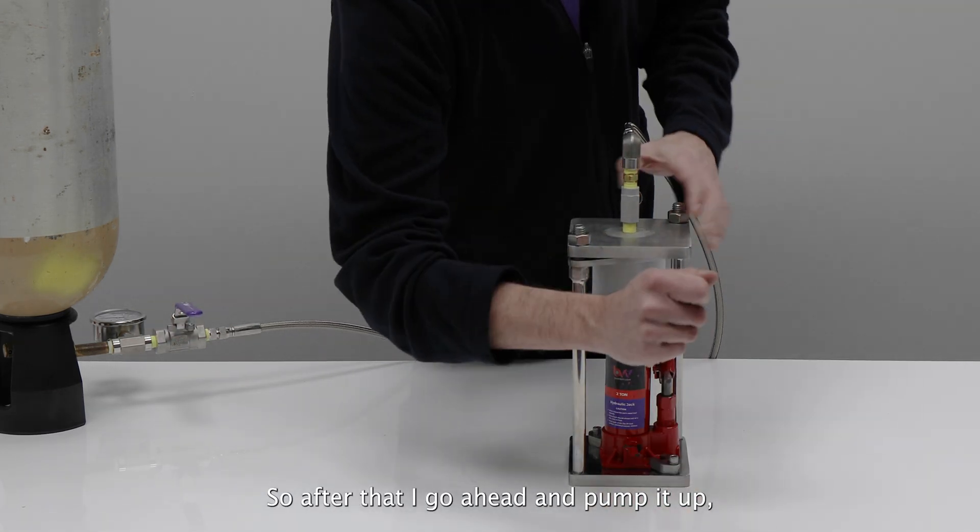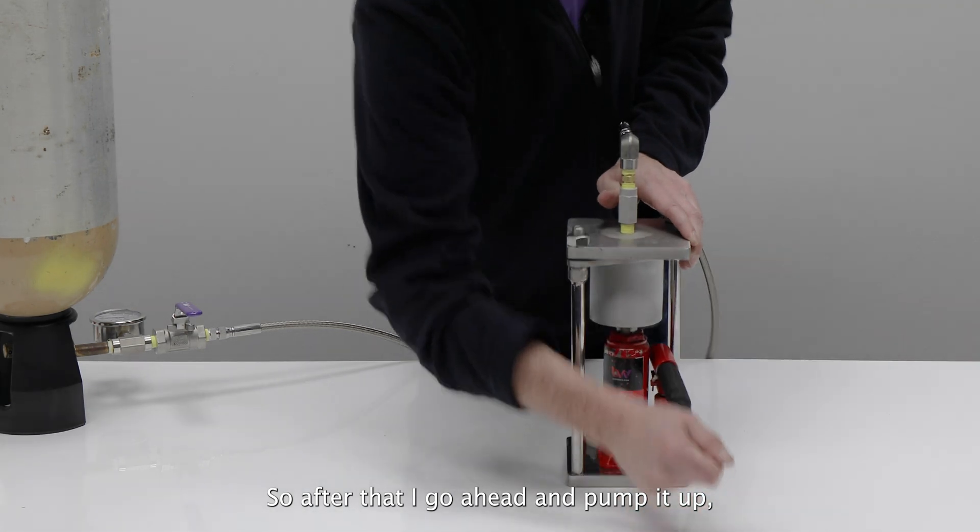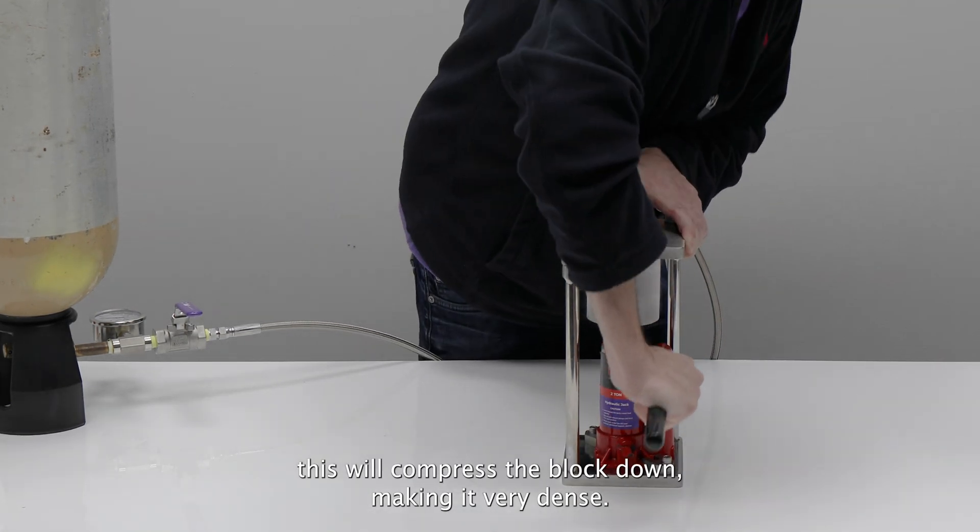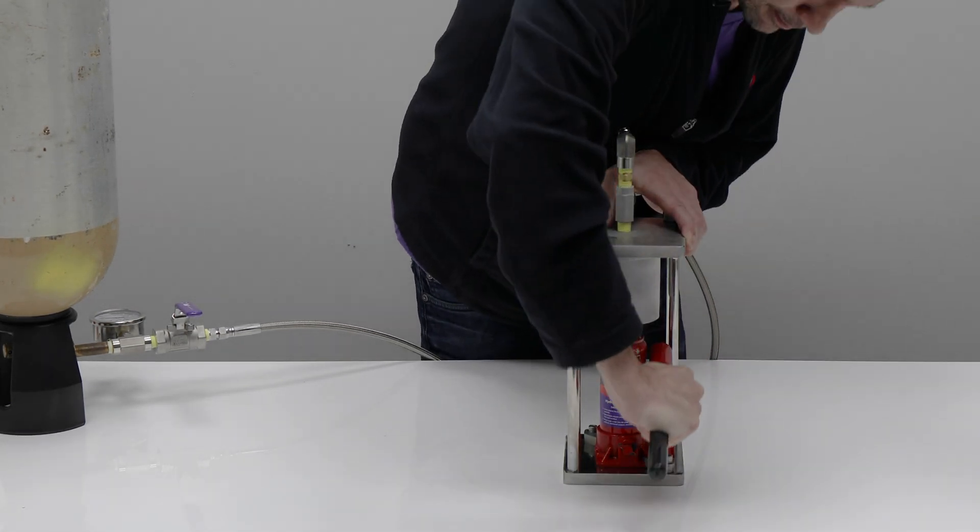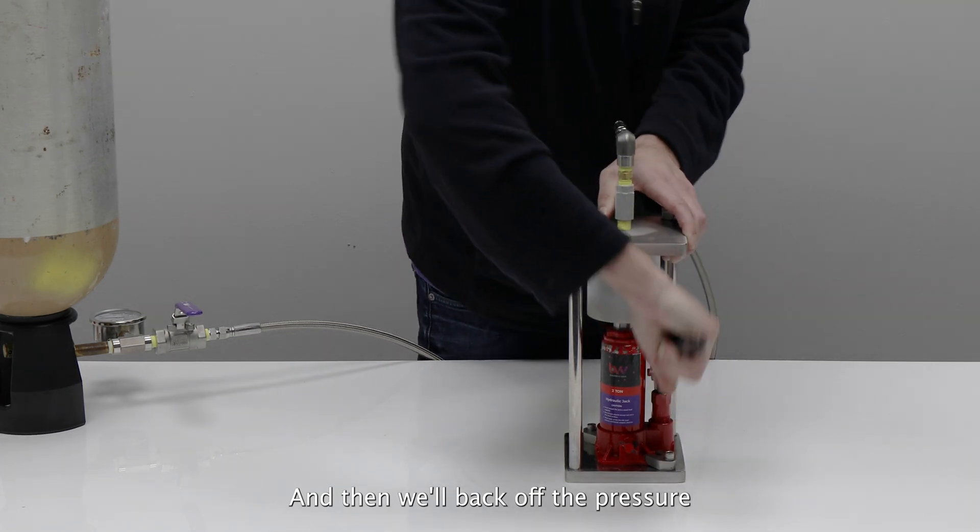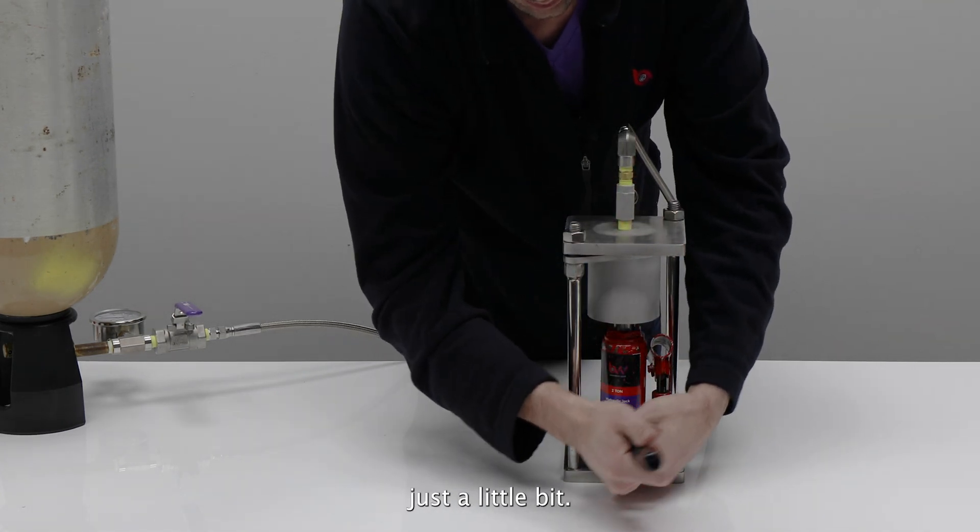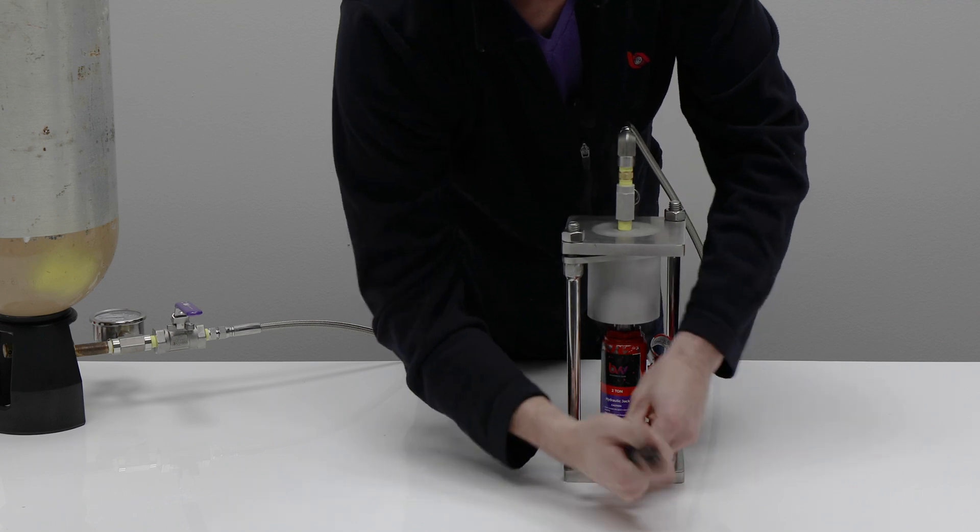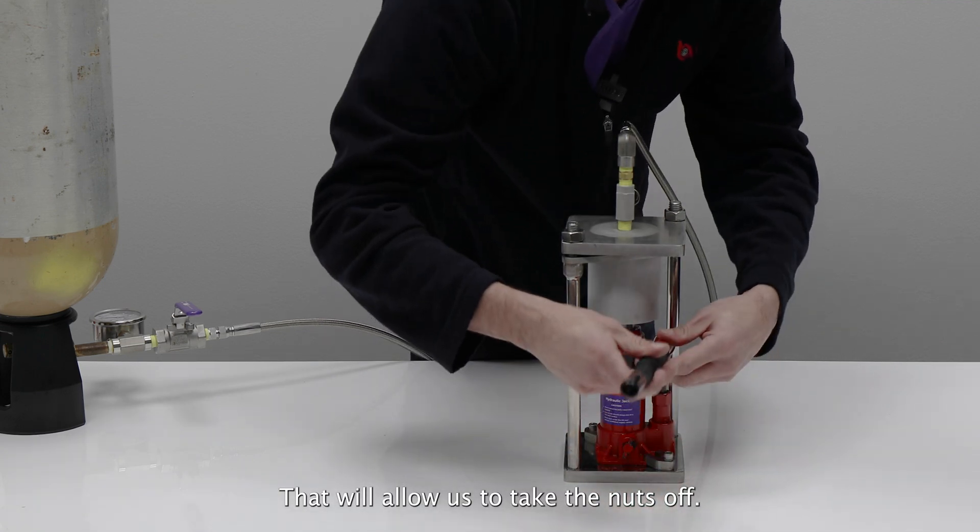So after that, I'm going to go ahead and pump it up. This will compress the block down, making it very dense. And then we'll back off the pressure just a little bit. That'll allow us to take the nuts off.